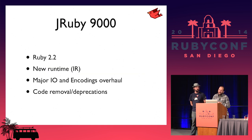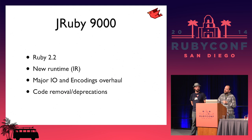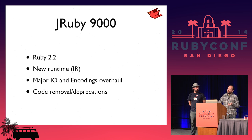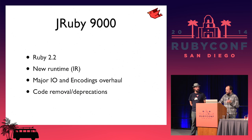JRuby 9000 is going to target Ruby 2.2 support. We have a new runtime, which I'll be talking about in a couple minutes. We've totally revamped IO and encoding support, which Charlie will be talking about. And we're removing a bunch of legacy cruft.